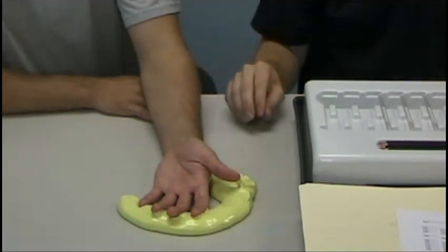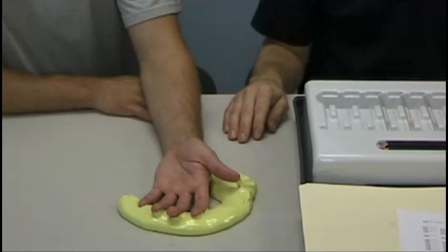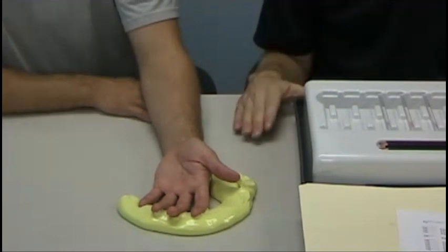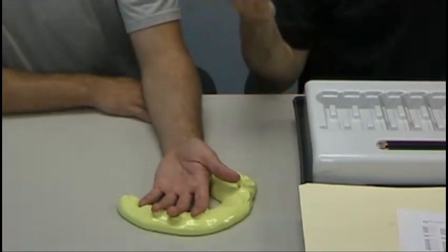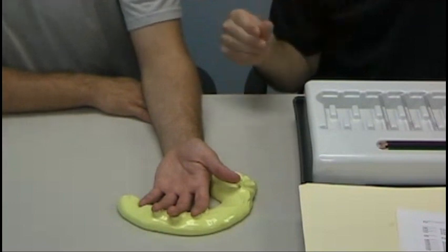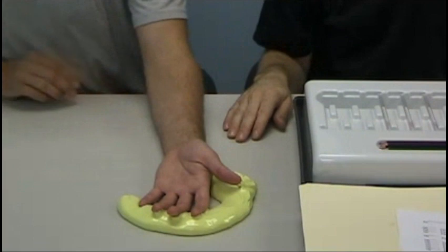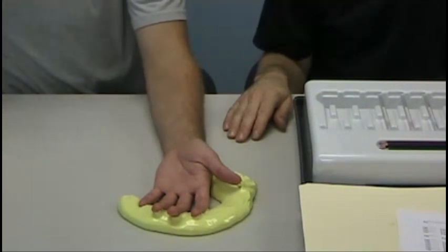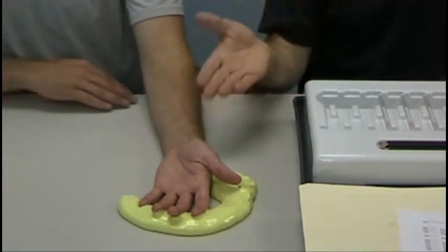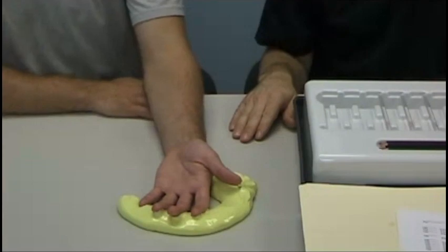That's pretty much how that works. That's the Simms-Weinstein monofilaments. Again, there is much more information about how the test is done in your readings. I just wanted to give you a visual to provide some context for that. We will also be going over these in class.